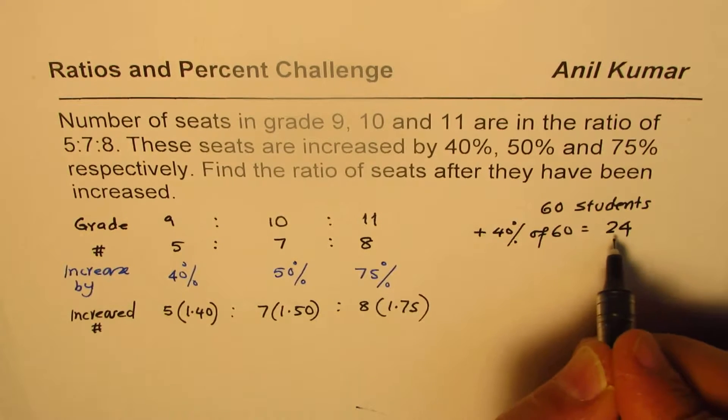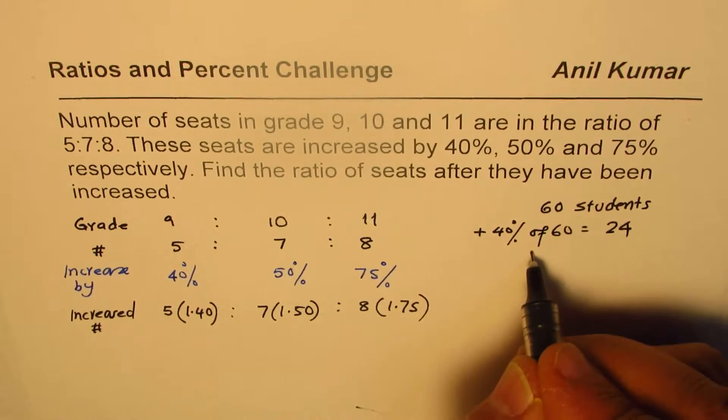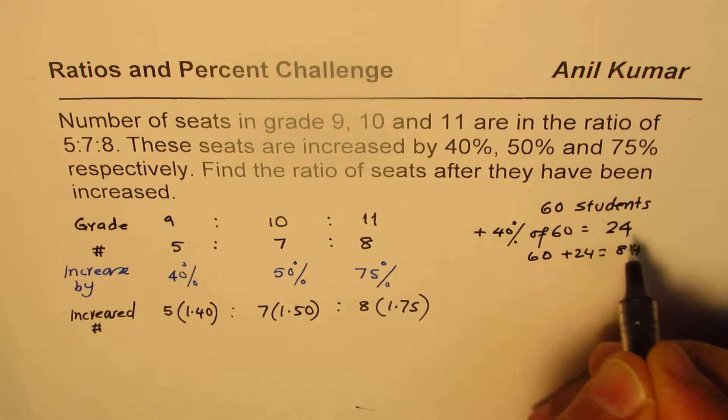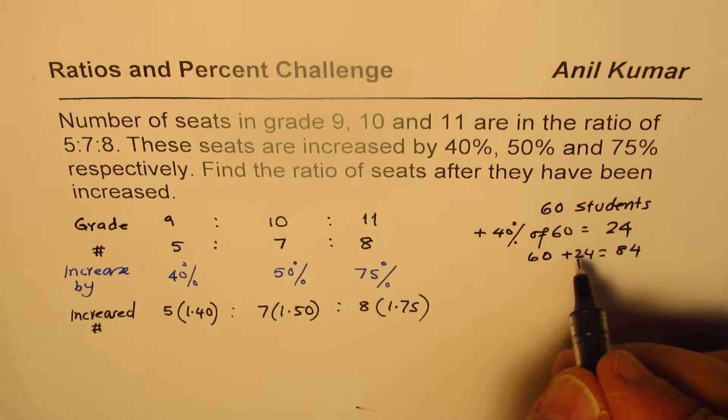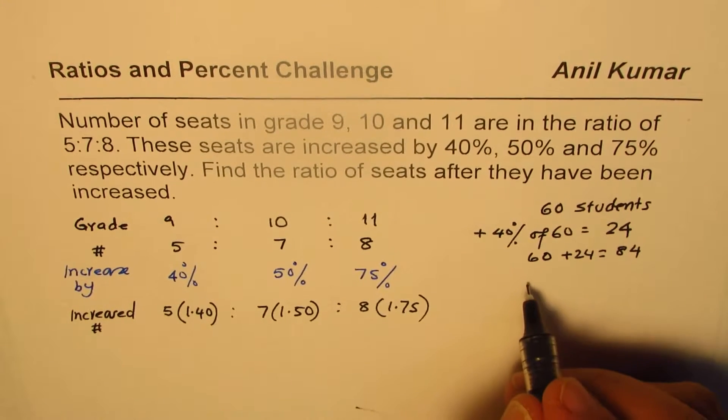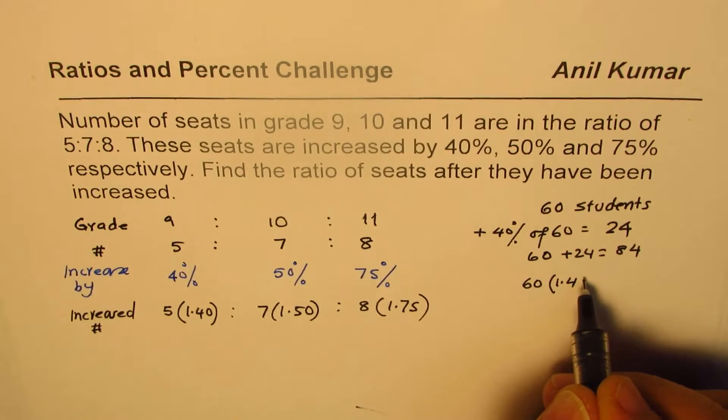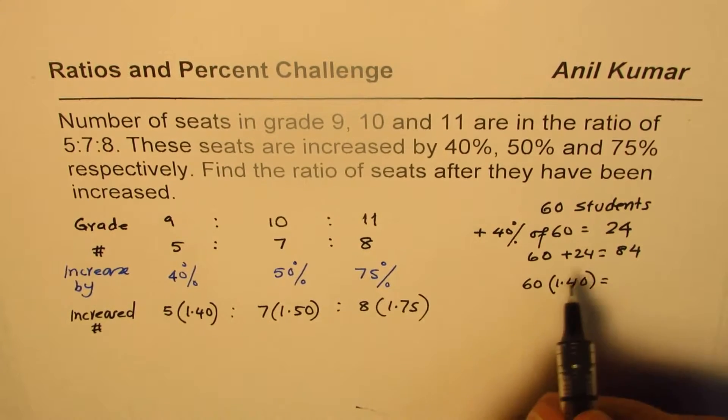So we get 40% is 24 students. So you will get 60 plus 24, which is 84 students, correct? So that is one way of doing it. Alternate method is you could multiply 60 by 1.4. Do you see that? 1.40. It does the same thing.